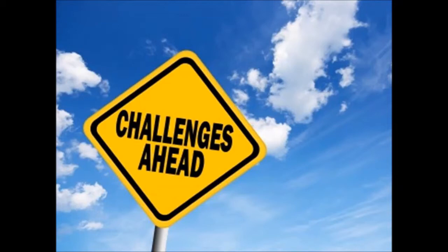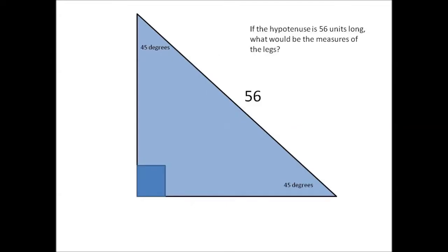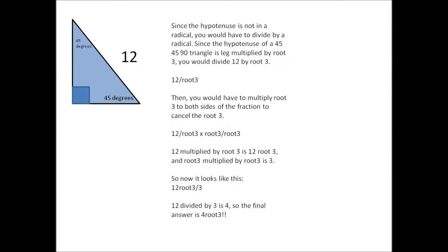Now is the time for some challenging problems. If the hypotenuse is 56 units long, what would be the measure of the legs? Since the hypotenuse is not in a radical, you would have to divide by a radical. Since the hypotenuse of a 45-45-90 triangle is the leg multiplied by root 2, you would divide 12 by root 2. Then multiply root 2 to both sides of the fraction to cancel the root 2. 12 multiplied by root 2 is 12 root 2, and root 2 multiplied by root 2 is 2. So now it looks like this: 12 root 2 divided by 2. 12 divided by 2 is 6, so the final answer is 6 root 2.